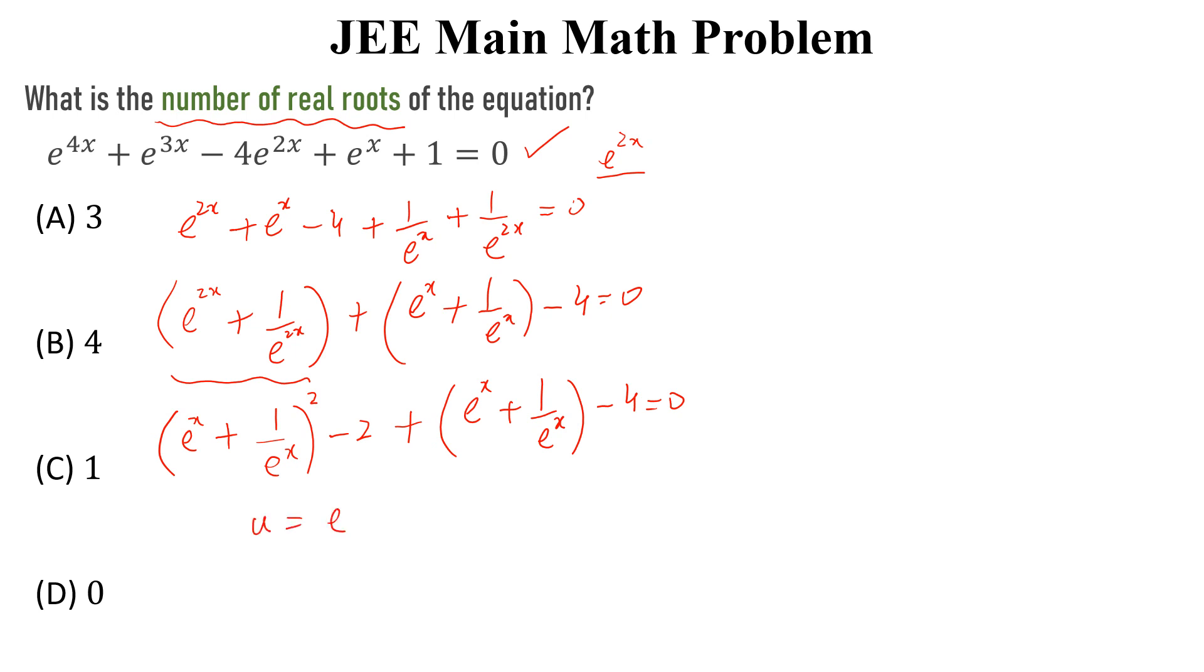Now, let u is equal to e to the power x plus 1 over e to the power x. This equation will become u square plus u and minus 4 minus 2.